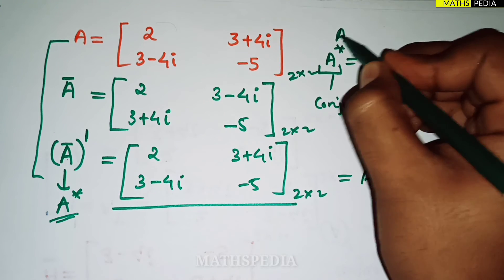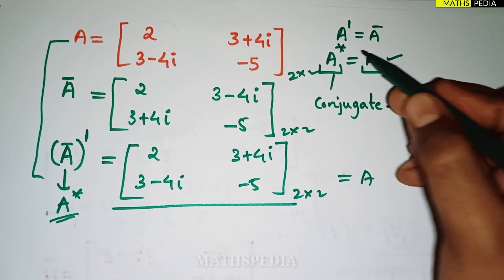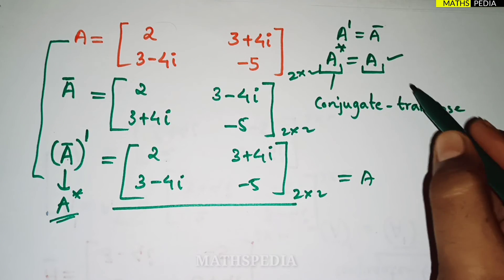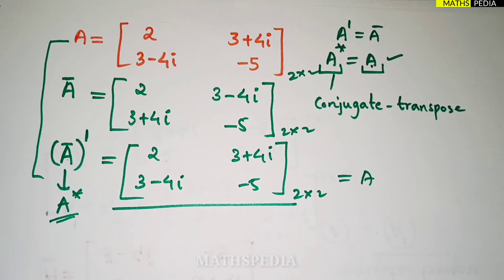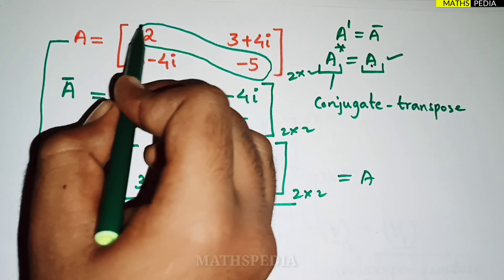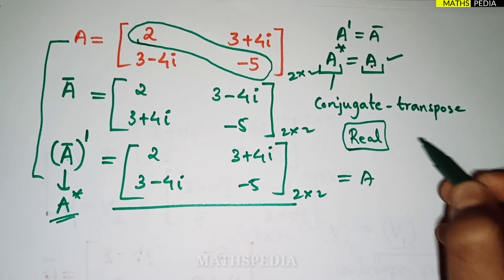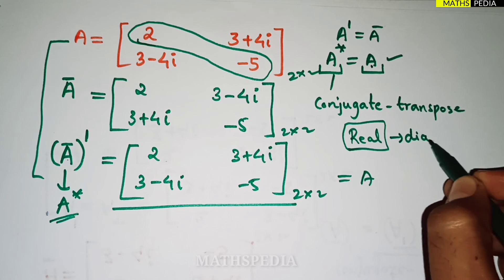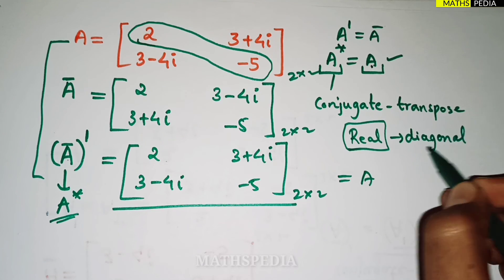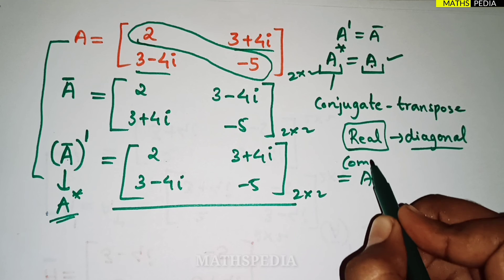To summarize the two conditions: A transpose should equal A conjugate, and the conjugate transpose A star should equal A. One more important property to observe: in a Hermitian matrix, the diagonal elements are always real numbers, while the non-diagonal elements are complex numbers.